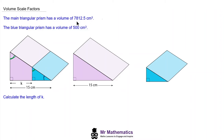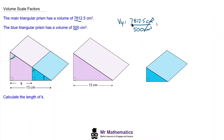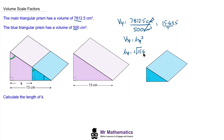Going back to the information in the question: because we've been given two corresponding volumes, we can work out the volume scale factor. This will be 7,812.5 centimeters cubed divided by 500 centimeters cubed. The centimeters cubed cancel, and 7,812.5 divided by 500 is 15.625 — that's the volume scale factor. Because the volume scale factor is the length scale factor cubed, the length scale factor is the cube root of 15.625, which works out as 2.5.